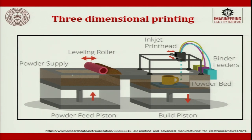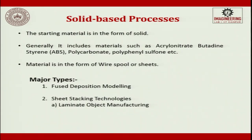In three-dimensional printing, the powder is pushed by a roller to put a layer on top, and then inkjet droplets fall from above to join those particles and produce a complex three-dimensional object. The last of the three process categories is solid-based processing. Here the starting material is in solid form — generally materials like ABS, polycarbonate, polyvinyl sulfonate, or metal wires. The starting form is a wire spool or a sheet.